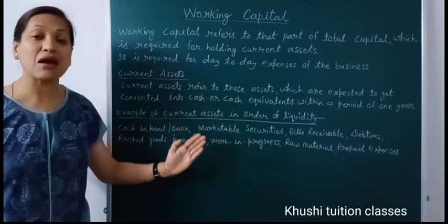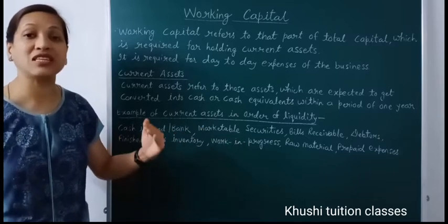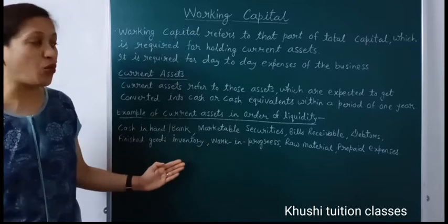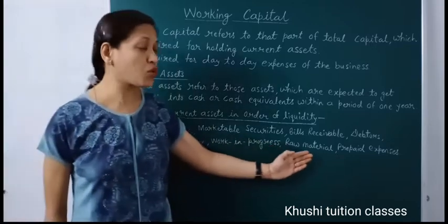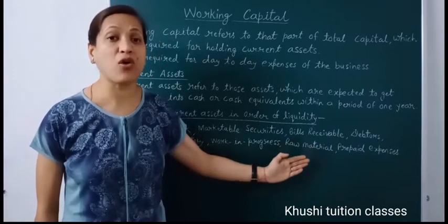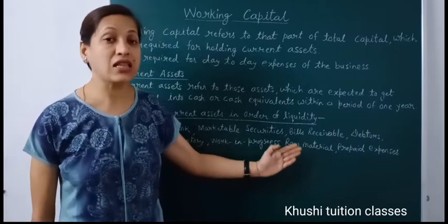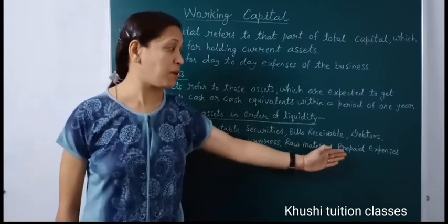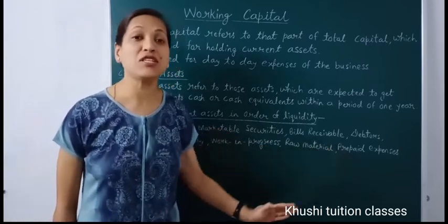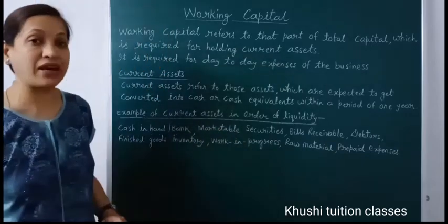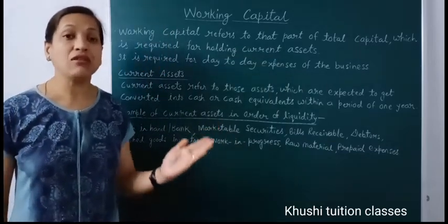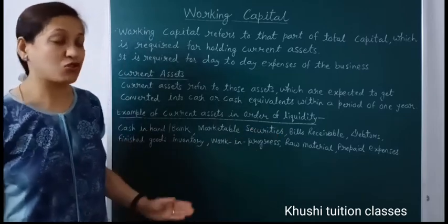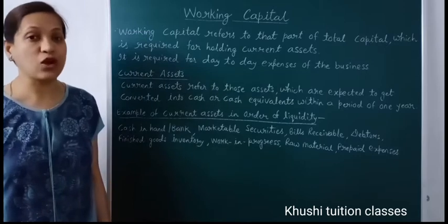Then work in progress — work in progress is a material on which processing has started but it has not yet been converted into finished goods. Then raw material — stock of raw material is necessary in our organization so that our production process continues. Then comes prepaid expenses — like insurance premium we pay for one year; the part that falls in the next year is prepaid expenses. So these are the current assets in order of liquidity.